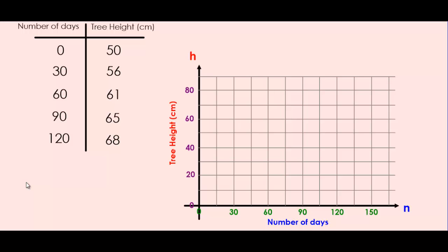Now we need to transfer the data from the table onto the graph. Remember: when reading points on a graph, we always read the x variable first, then the y variable. In this case we have n and h as our variables, so read the independent variable first, then the dependent variable. Our first point is (0, 50). We follow 0 along the n-axis, then up to 50 on the h-axis, which puts a point right here.